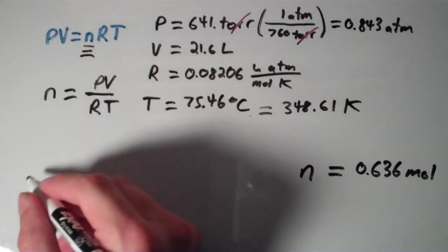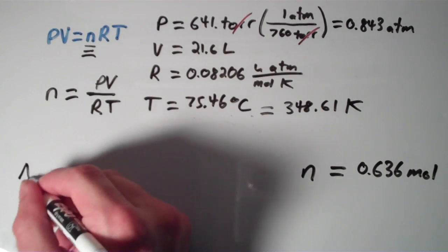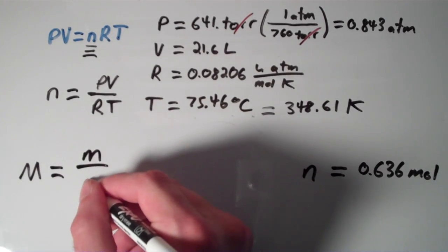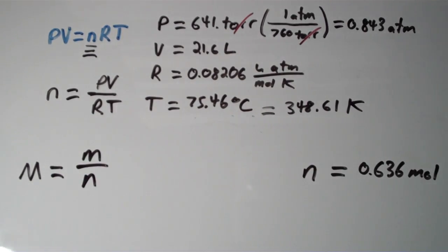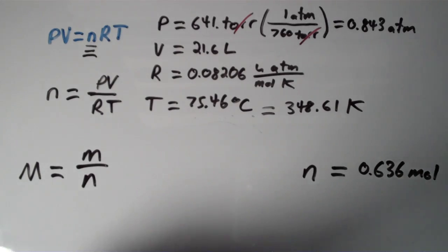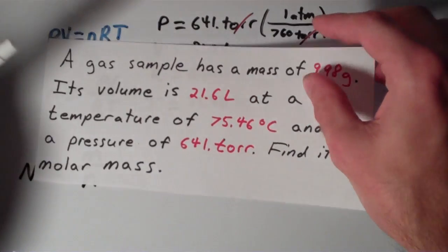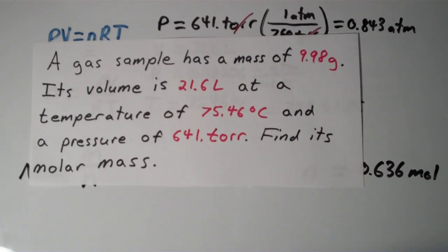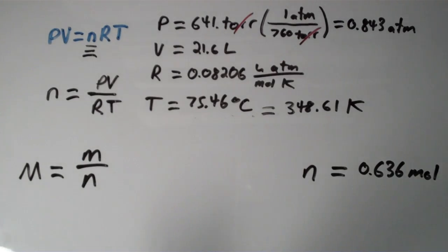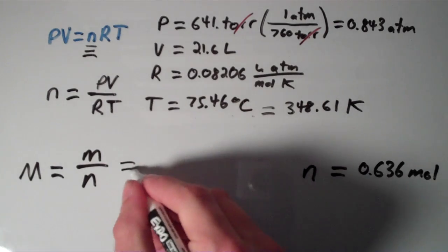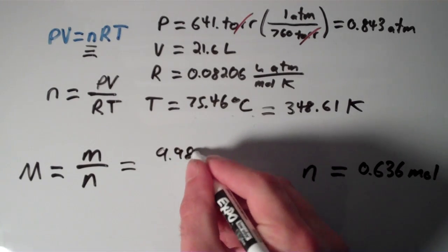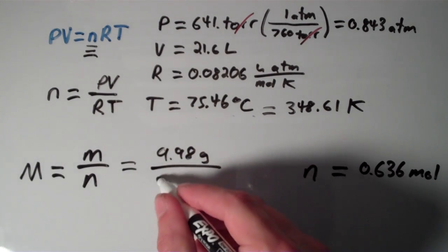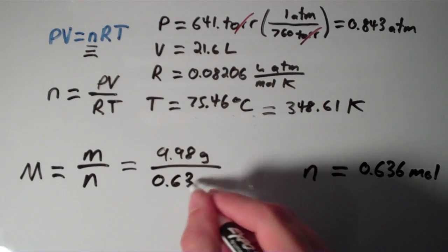So our n is equal to 0.636 moles. So remember that our molar mass, which is capital M, is equal to the mass divided by the number of moles. And if you think back to the original problem, the mass is actually given. It says a gas sample has a mass of 9.98 grams. So I'm going to fill that in. And we have 9.98 grams over the number of moles, which is 0.636 moles.